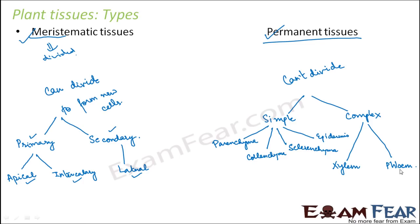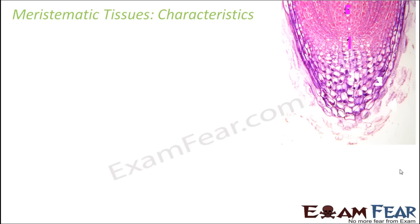Let us start with meristematic tissue. Before talking about the different categories, let us understand the basic characteristics that define a meristematic tissue. The first characteristic is that they are composed of small cells. The main purpose of meristematic tissue is to divide and form new cells.